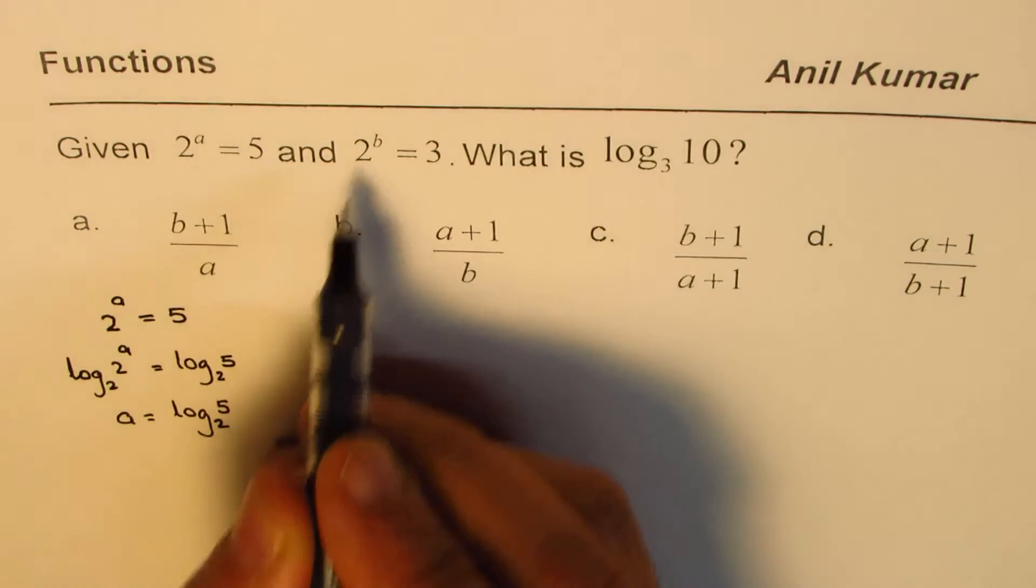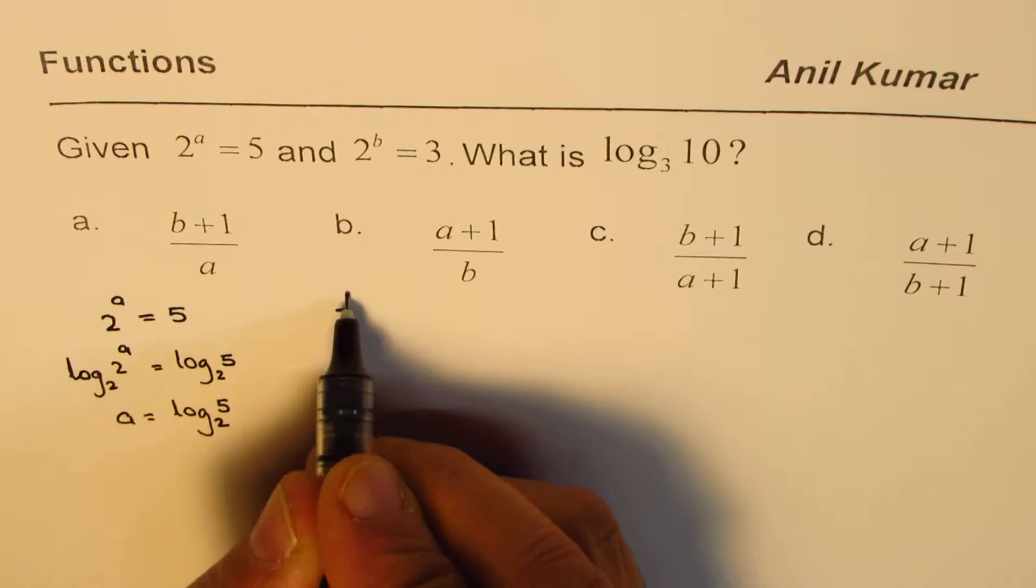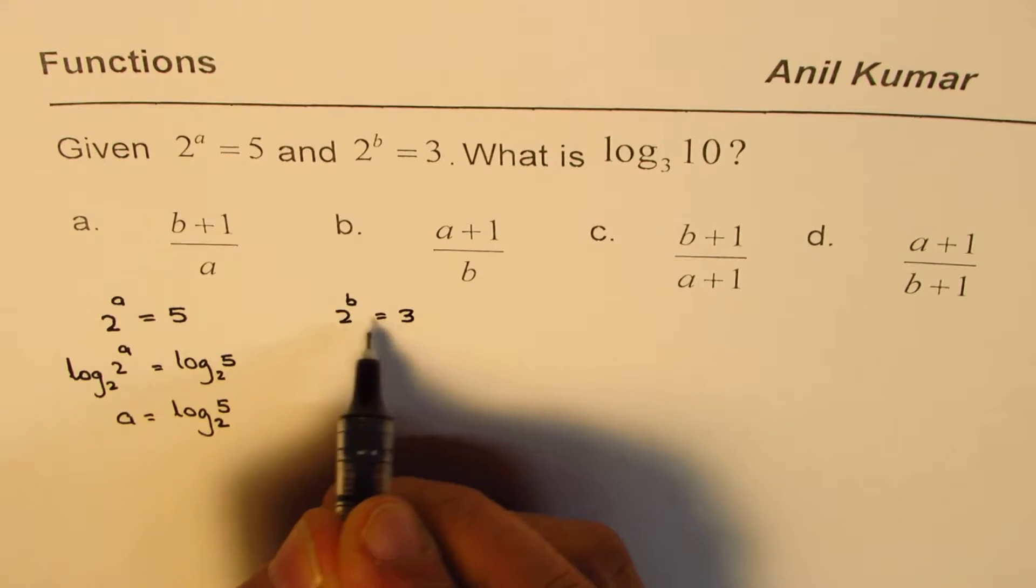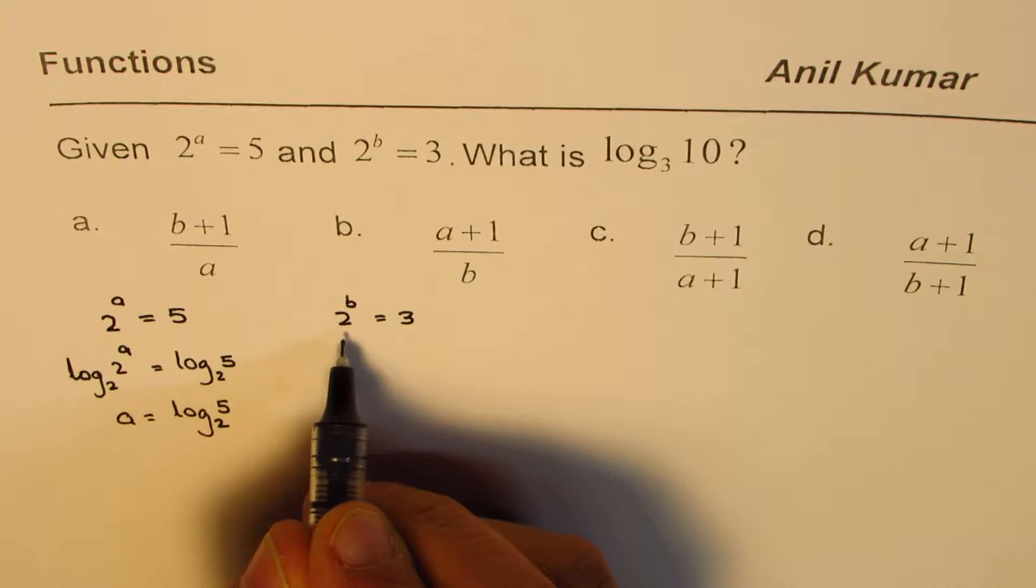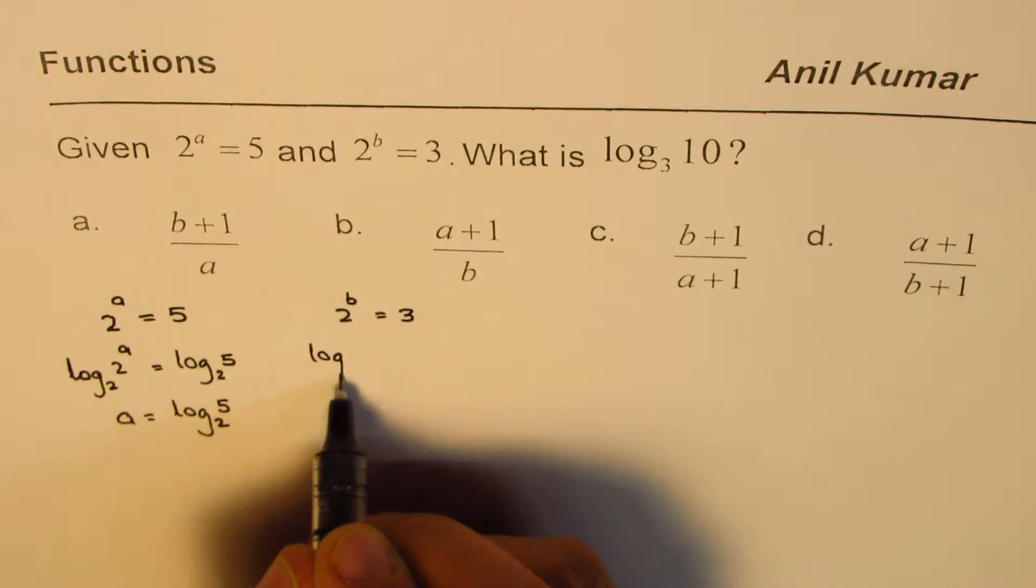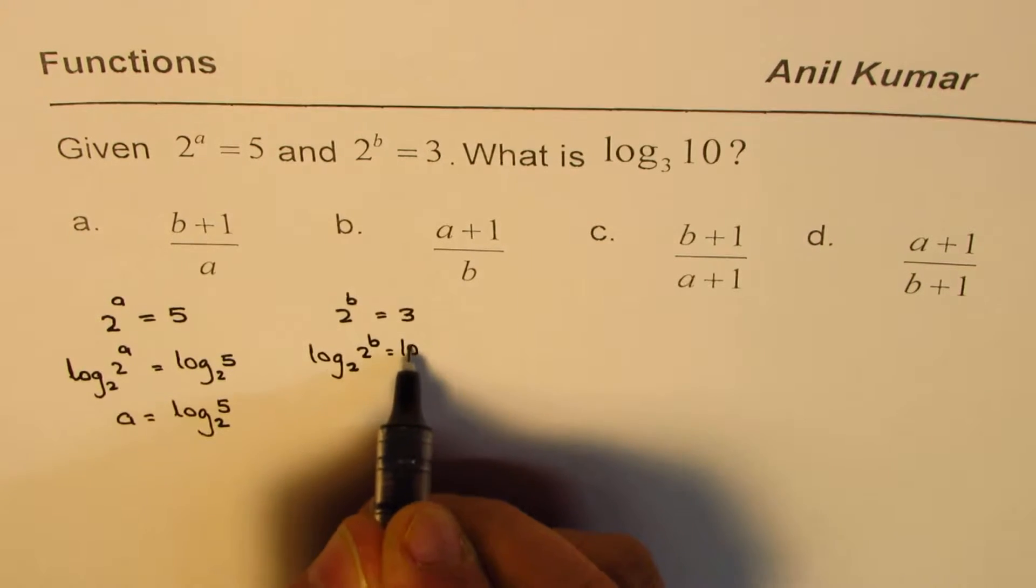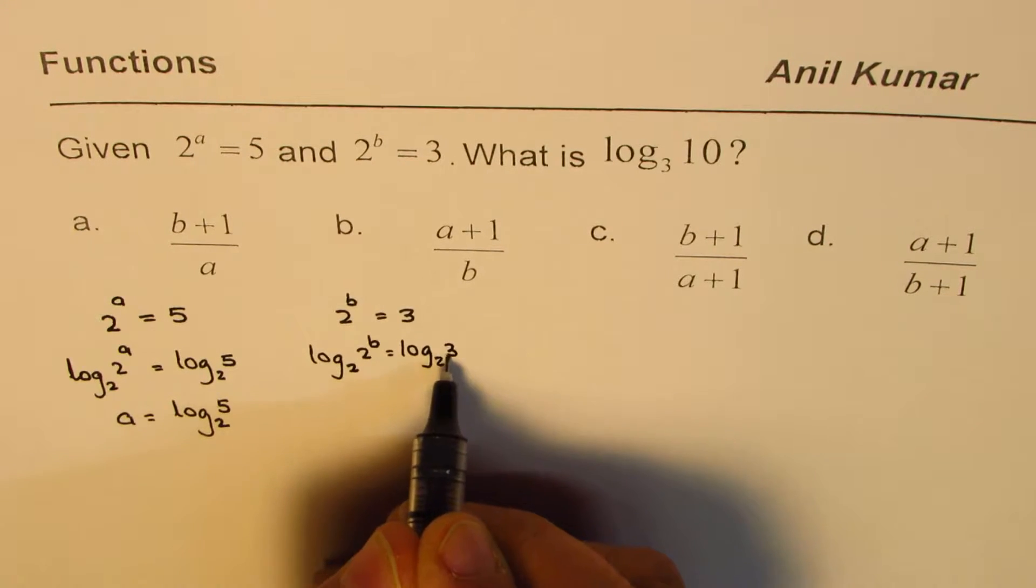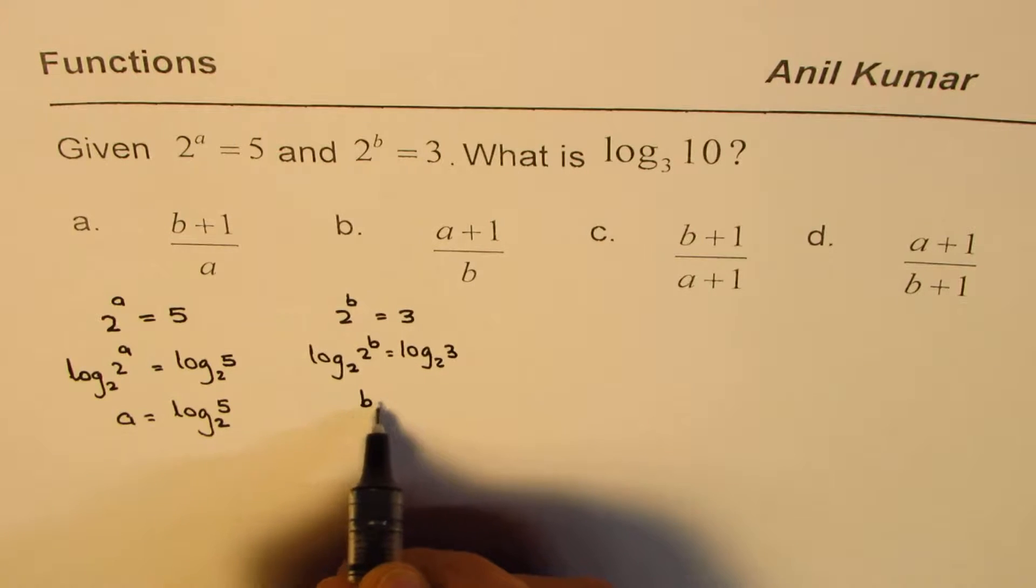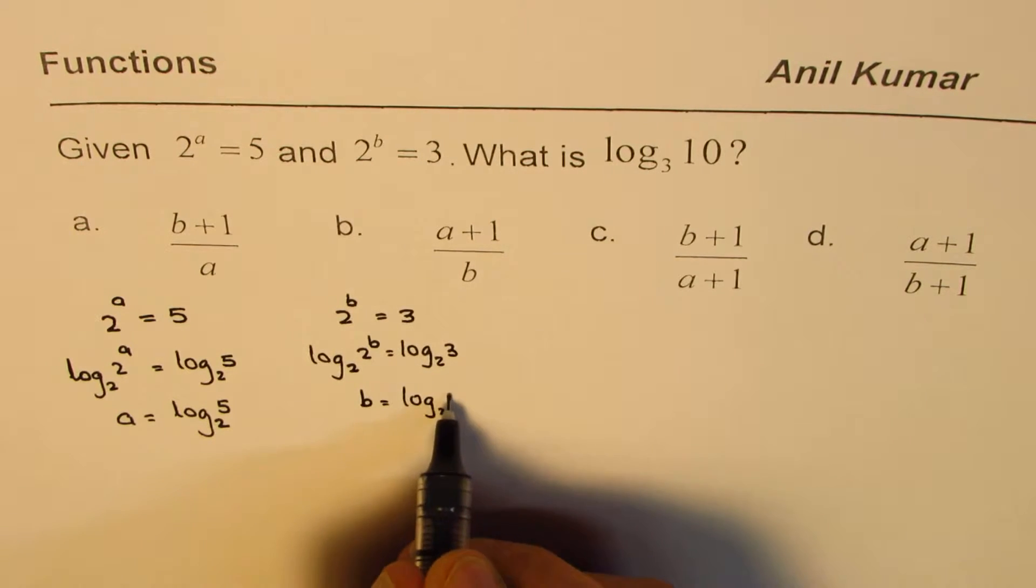Similarly, we can write the expression for 2 to the power of b equals to 3. If I take log to the base 2, we get log to the base 2 of 2 to the power of b equals log to the base 2 of 3. And that is b equals log to the base 2 of 3.